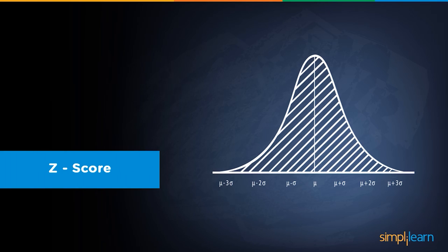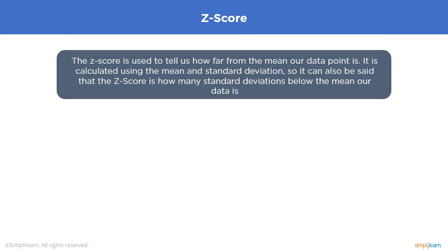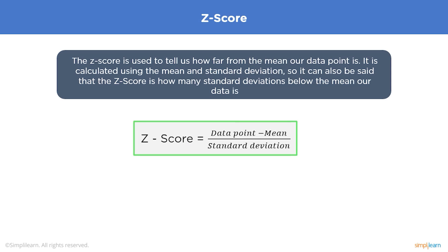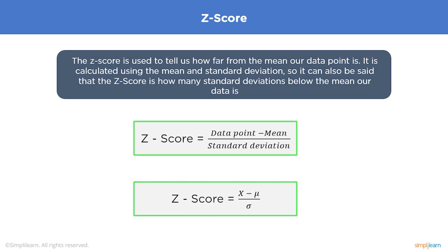A z-score tells us how far from the mean a data point actually is. It is calculated using the mean and standard deviation — specifically, it is how many standard deviations below or above the mean our data point lies. The z-score formula is: z = (x − μ) / σ. Any normal distribution can be standardized by converting its values into z-scores, which tell you how many standard deviations from the mean each value lies.